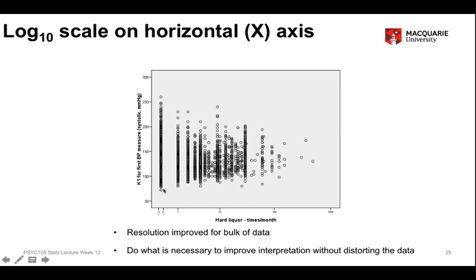What it does is stretch out the data points to use most of the graph space available, at least on the horizontal axis. It gives us a clearer picture of the pattern of points without creating the exaggeration we saw in the first graph. So that's the key trade-off: use the space efficiently, but in a way which does not cause distortion or biased interpretation of the graph.